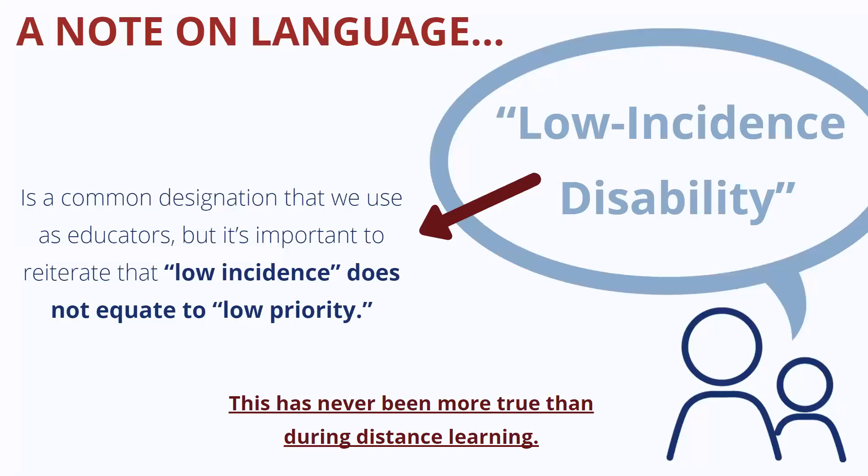One more note on language: the term low incidence disability refers to the rate at which we find that particular disability in the population, but we want to make sure that we communicate to other stakeholders that low incidence does not equate to low priority. That has never been more true than now during distance learning. Equity for students with low incidence disabilities and for the full range of accommodations and modifications has never been more important than in this moment of COVID-19 distance learning.